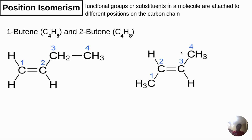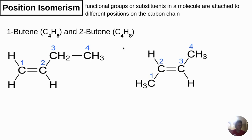Next, we move on to position isomerism. Most times people misunderstand the difference between position isomerism and functional group isomerism. There is a similarity but also a difference. Position isomerism refers to changes in position of either a functional group or a substituent. Note that position isomerism also talks about functional groups, whilst functional group isomerism also discusses functional groups. The key difference is that in position isomerism we are talking about a single functional group in a different carbon position, whilst in functional group isomerism the functional group itself changes even though the molecular formula is the same.